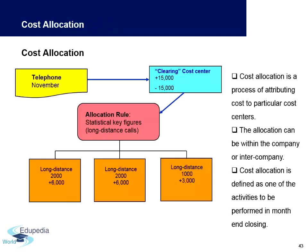Cost allocation is the process of attributing costs to particular cost centers. For example, a telephone charge from November can be posted to a clearing cost center and then allocated into categories like long-distance and short-distance calls. Within those categories, further sub-categories may exist depending on how the organization wants to allocate costs.